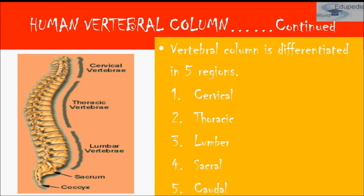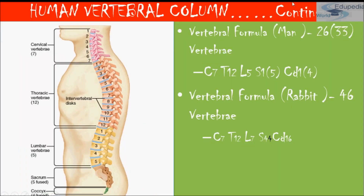The vertebral formula for humans is 26 bones in adults but 33 in children. There are 7 cervical vertebrae (C7), 12 thoracic vertebrae (T12), 5 lumbar vertebrae (L5), 5 sacral vertebrae (S5), and 4 caudal vertebrae (Cd4).